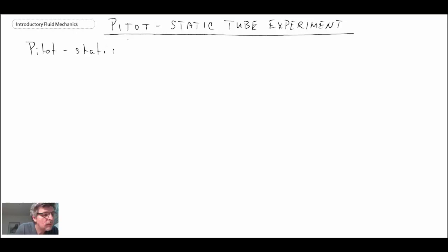We're now going to do an experiment involving the pitostatic tube. In the last segment we talked about the pitostatic tube as a device that you can use to measure velocity in a flow.